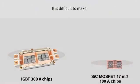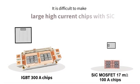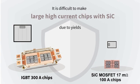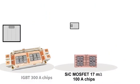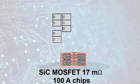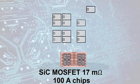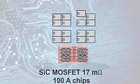It is difficult to make large high-current chips with SiC due to yields. So, building a high-current silicon carbide MOSFET module requires a large number of chips in parallel, which makes the design and layout challenging.